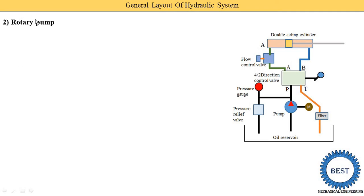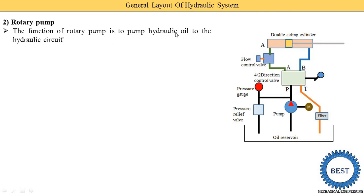The second component is the rotary pump. Why is the rotary pump required? In an oil hydraulic system, we need to increase the pressure. Without increasing pressure, the oil is not able to create much force. If we increase the pressure, then the force is increased. The function of the rotary pump is to pump hydraulic oil to the hydraulic circuit — the pump suctions oil from the oil reservoir, increases its pressure, and this high-pressure oil is supplied to the hydraulic circuit: the direction control valve, flow control valve, and double acting cylinder.